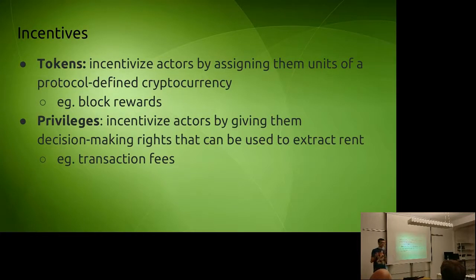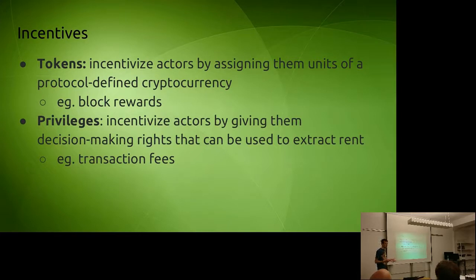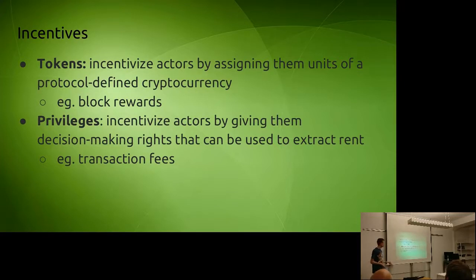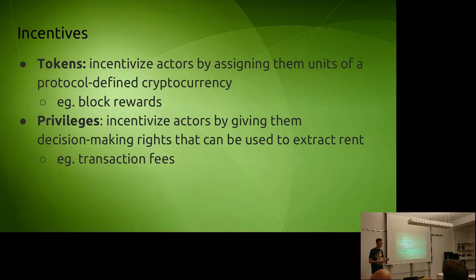Economics is the other half of the toolbox. One major part is incentives, and there are two ways to split incentives. The first split: tokens versus privileges. Tokens incentivize actors by assigning them units of a cryptocurrency defined inside the protocol — for example, Bitcoin assigns a miner 12.5 Bitcoins for creating a block, Ethereum assigns 5 Ether. Or you can penalize people by deleting their coins. Privileges incentivize actors by giving them decision-making rights where those rights can be used to extract rent.